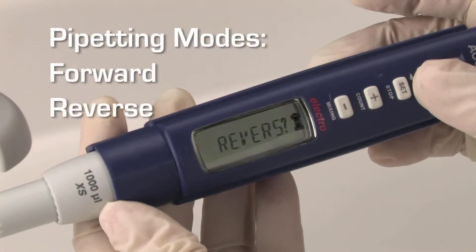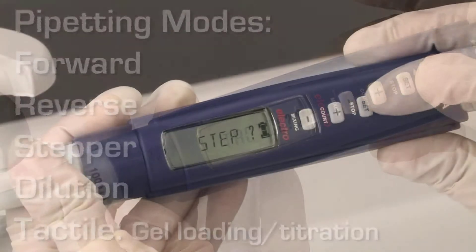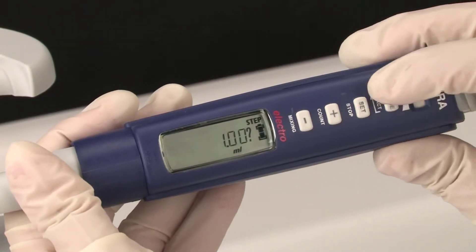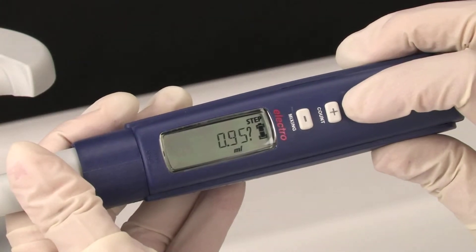There are five different pipetting modes to choose from. Volume is selected using the plus and minus keys. Push the set button to lock in the desired volume measurement.